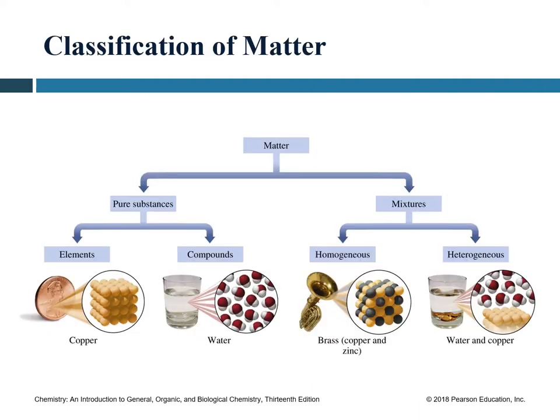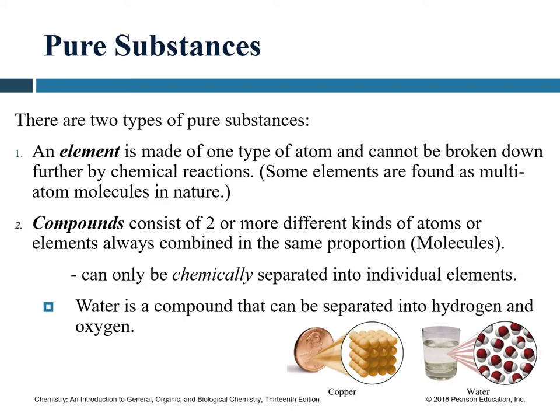Matter can be classified into two major categories. The first is called a pure substance — it is always composed of just one type of thing. The second kind of matter is called a mixture. Pure substances can be further classified into elements and compounds, and mixtures can be classified into homogeneous or heterogeneous mixtures.